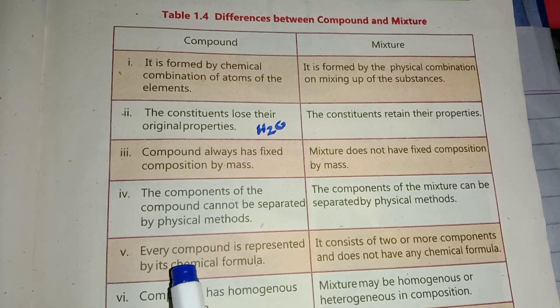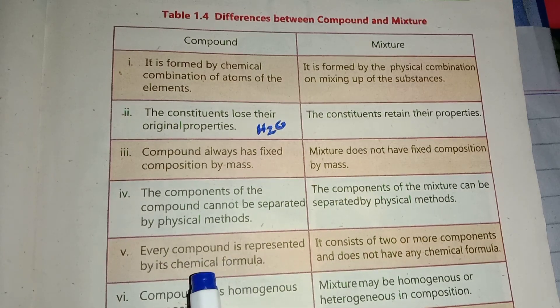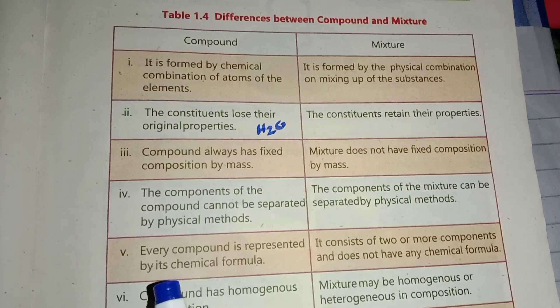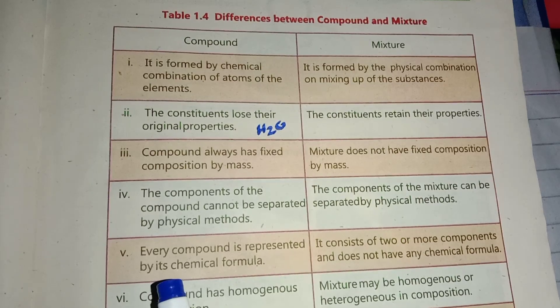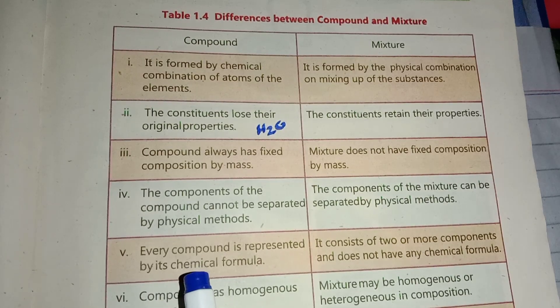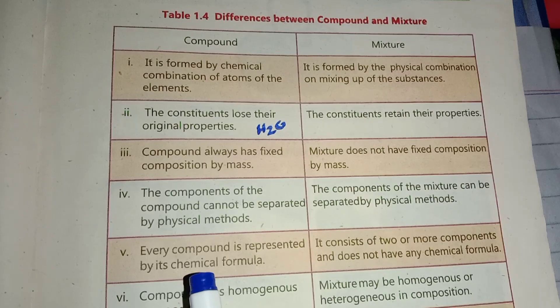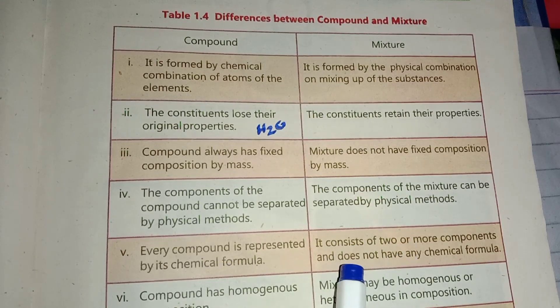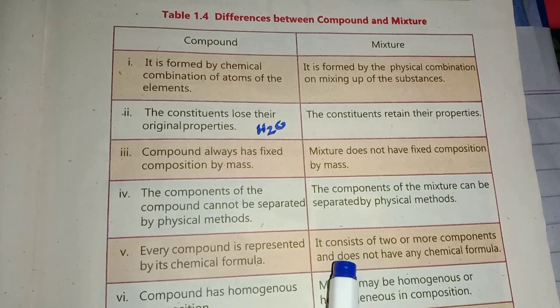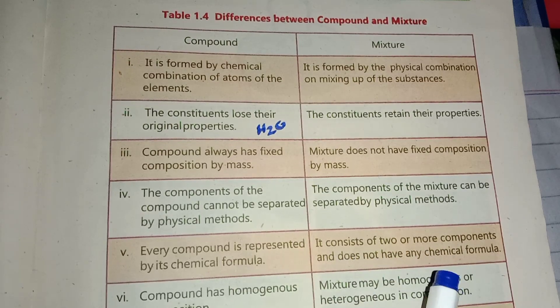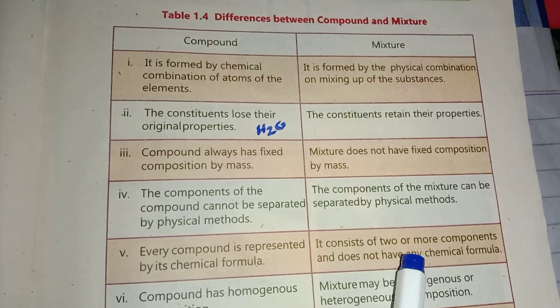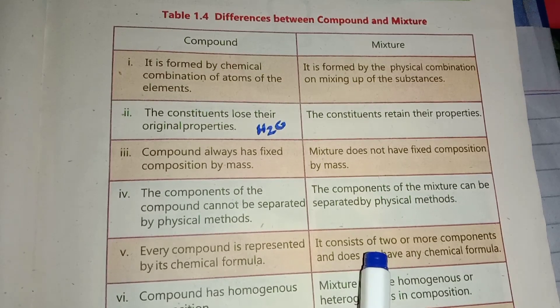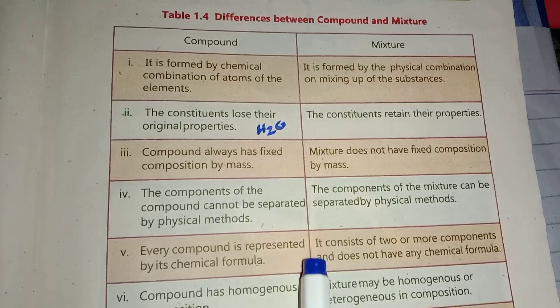Fifth difference: Every compound is represented by its chemical formula. The compound has a chemical formula showing its elements. A mixture consists of two or more components and does not have any chemical formula. Water has a formula, but mixtures don't.